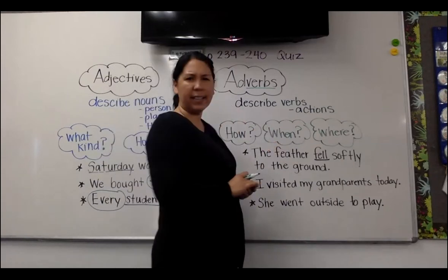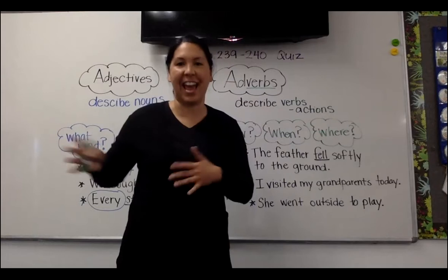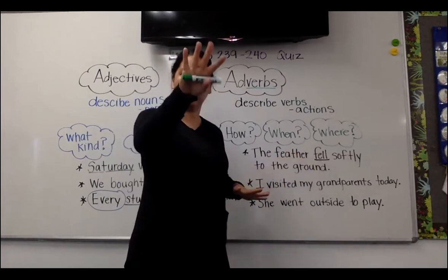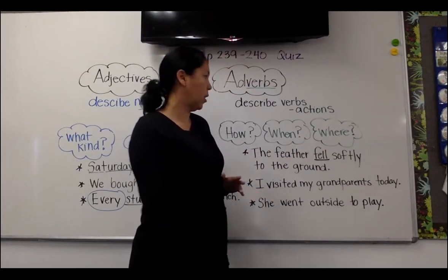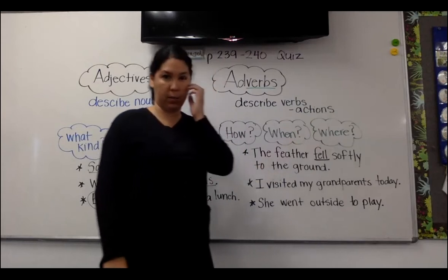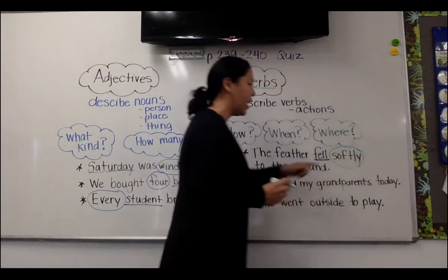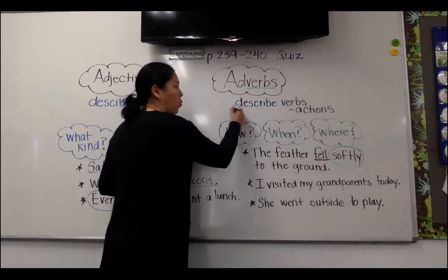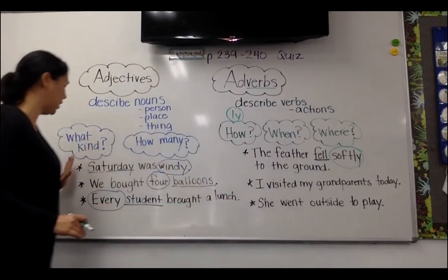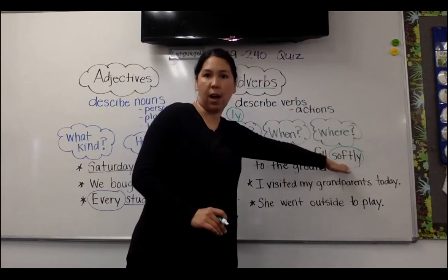Let's look at our sentences and see if we can figure out where the adverb is. We're always looking at what word is the action that the adverb is describing. The feather fell softly to the ground. Fell is my action. Do you see a word in the sentence that tells how it fell, when it fell, or where it fell? How did it fall? Softly. I always like us to look for those LY words first, because a lot of times adverbs end with LY. So always look for an LY first. It's kind of like with adjectives — always look for a number first. With adverbs, always check for an LY word first.